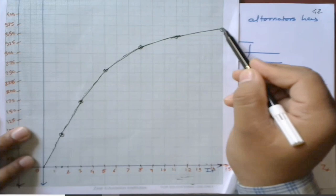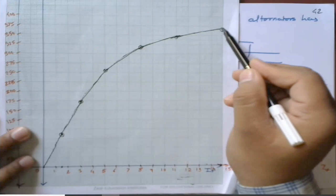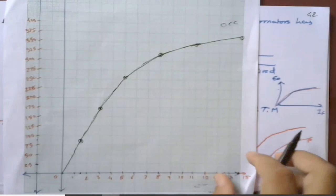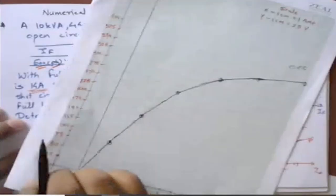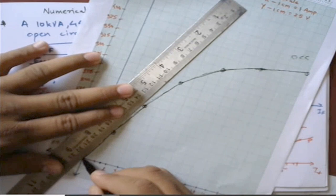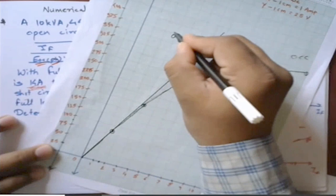By joining the plotted points, we get the open circuit characteristic (OCC) curve. Next, we draw the tangent to the OCC from the origin — this tangent is called the air gap line.